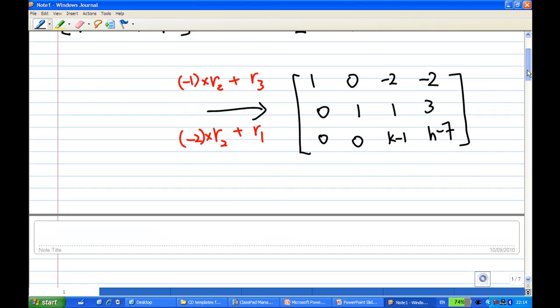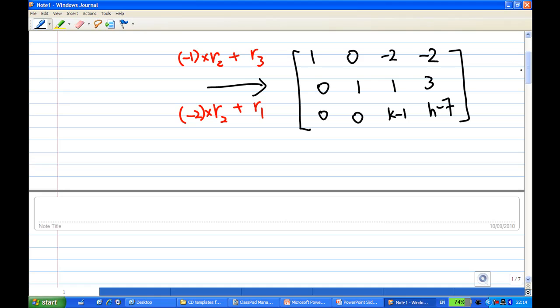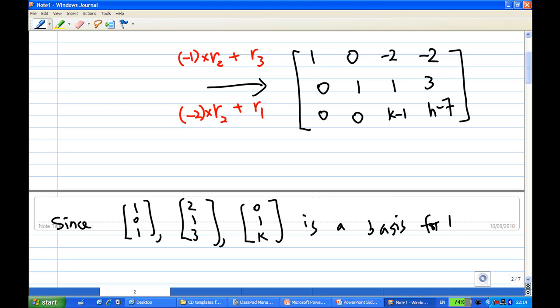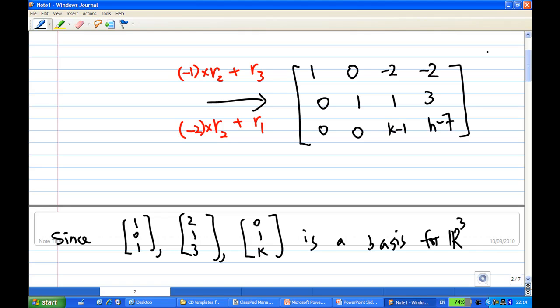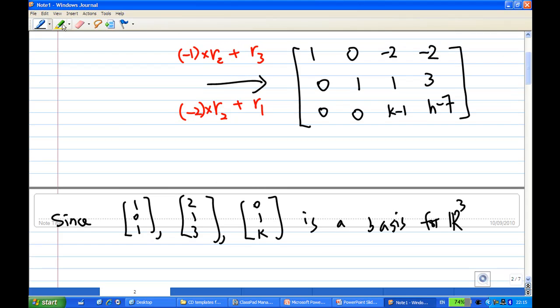So after we got this matrix, since we know that the 3 column vectors (1, 0, 1), (2, 1, 3), and (0, 1, k) is the basis for R³, therefore the system equation when you solve has a unique solution. That means that we conclude that the last entry, last row, k minus 1 cannot equal 0. So k minus 1 not equal 0. That is, k not equal to 1.